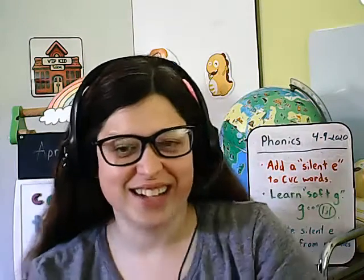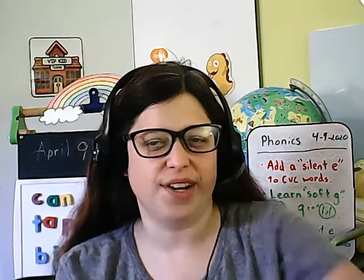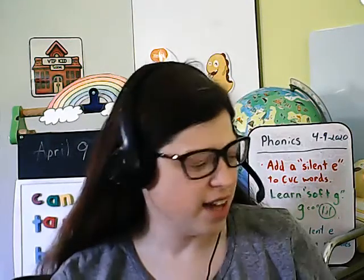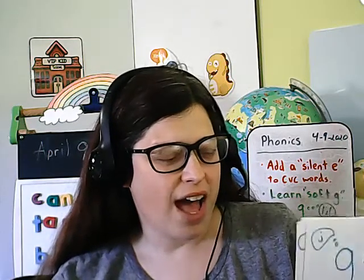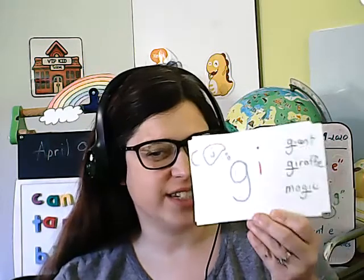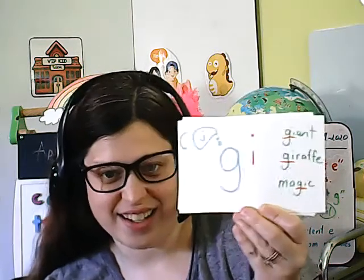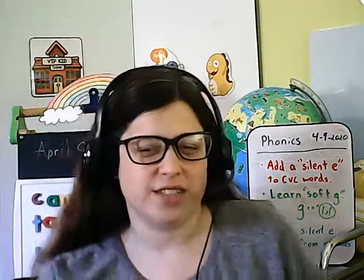Good morning, boys and girls. Today in phonics, I would like to focus on two skills. One is that silent E we've been working on all week. And the second one is a skill that we have barely touched on — it is the soft G, or how we can figure out when G says J instead of G. So we will talk about those two things. We have three activities we're going to do today. Please pause and grab something to write with and something to write on.